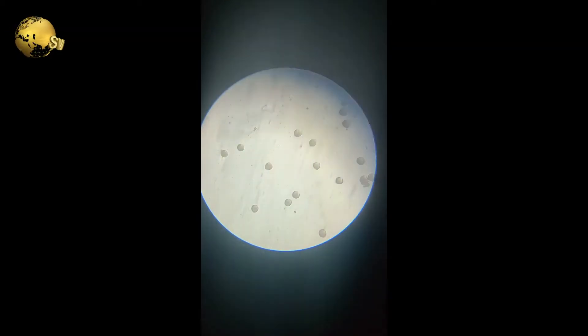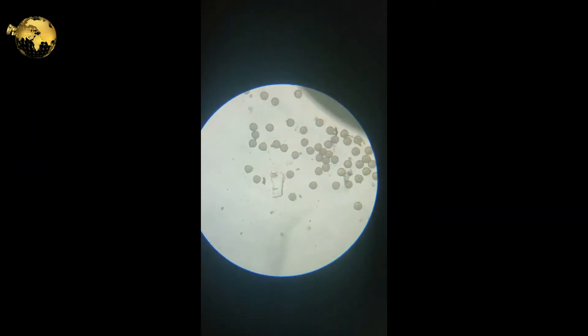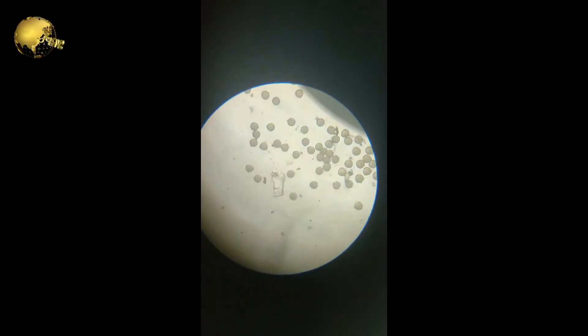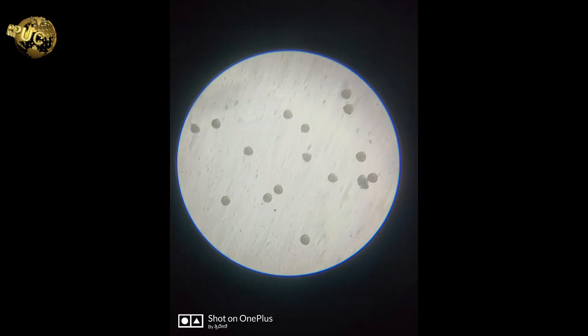In the first trial, number of pollen grains on a microscopic field was 16, and the number of pollen grains germinated is 5. In the second trial, the number of pollen grains on the microscopic field is 53, and the number of pollen grains germinated is hardly 4. In the third trial, the number of pollen grains on the microscopic field is 14, and the number of pollen grains germinated is 4.